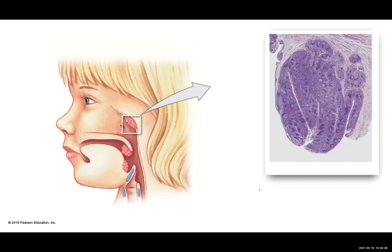As we take a look at this particular image, what we're focusing in on are your tonsils. Your tonsils are large lymphoid nodules located in your pharynx, which makes sense because both your respiratory system and your digestive system share this particular structure. We know that when we're inhaling or eating food and water, we're bringing in quite a few pathogens.